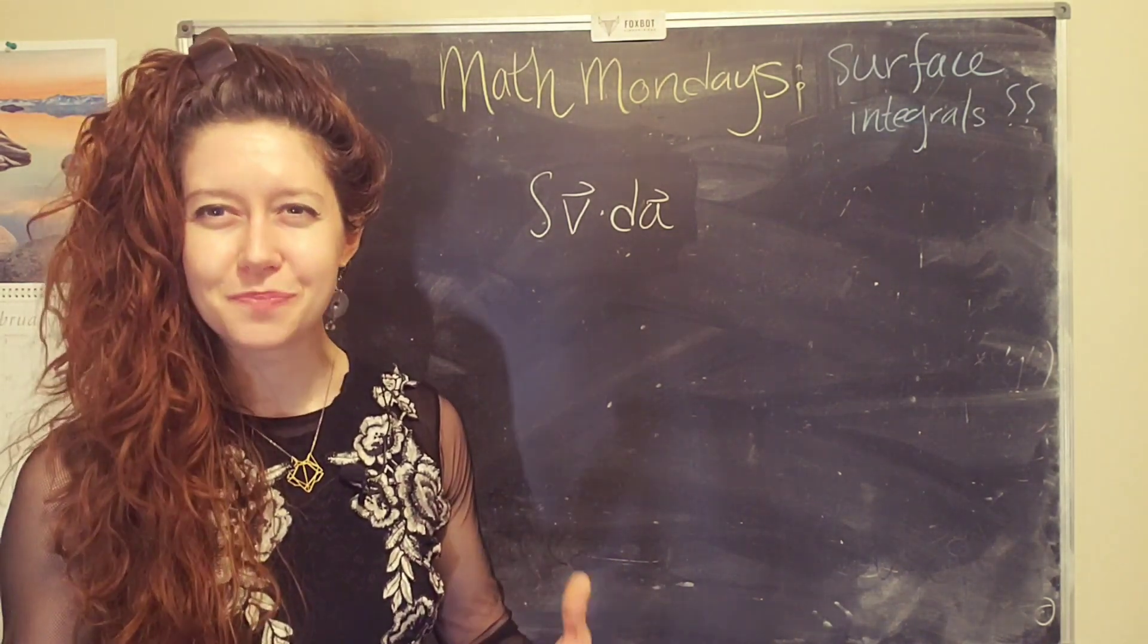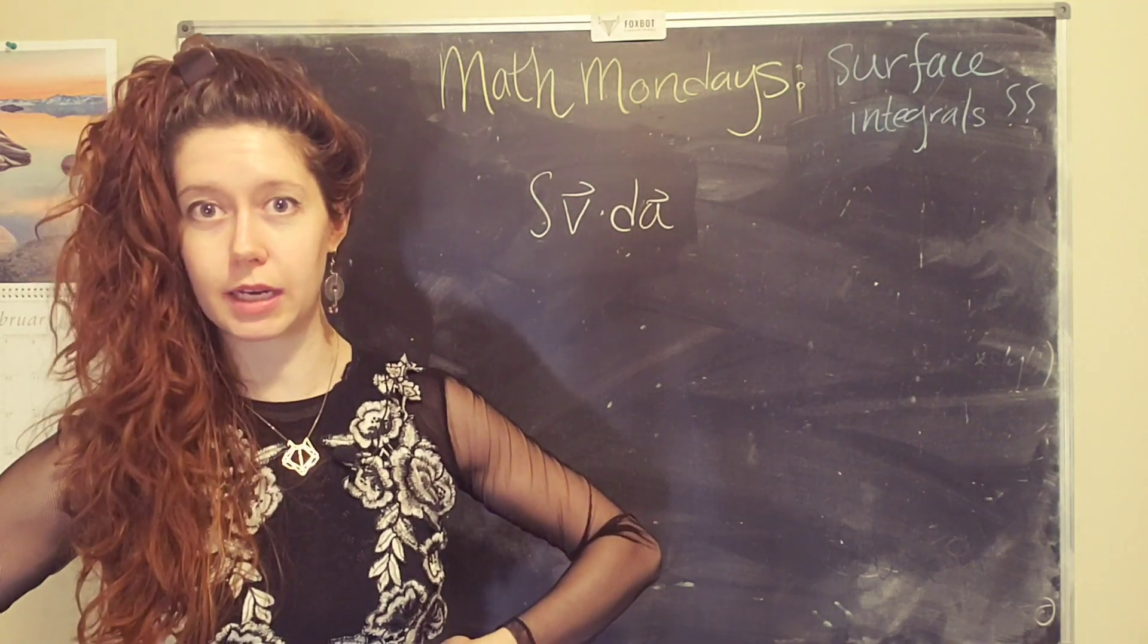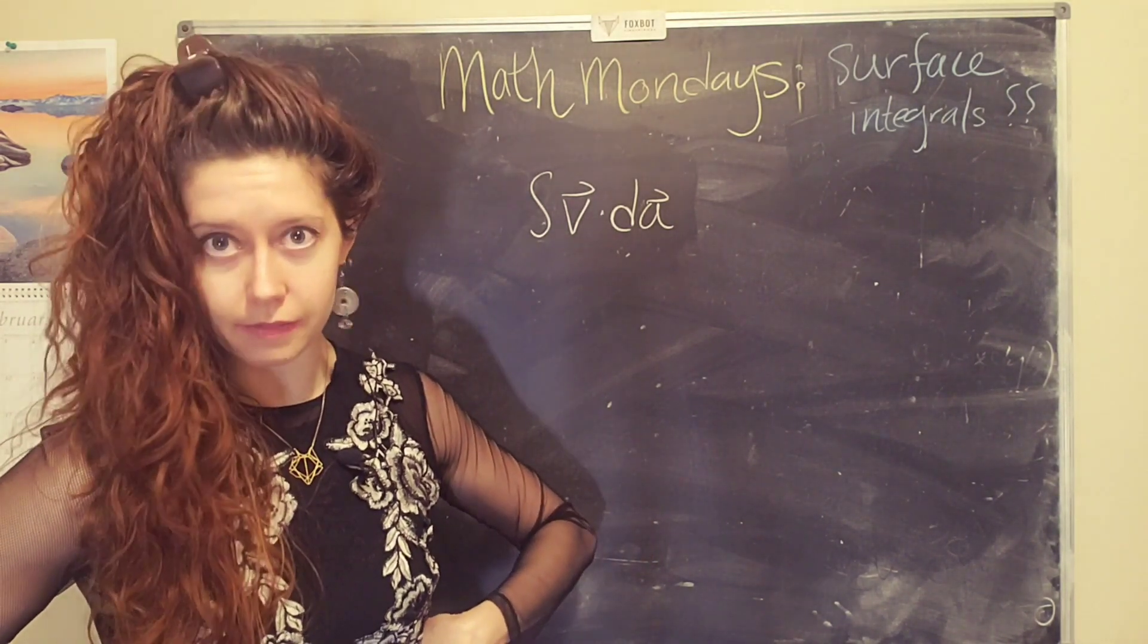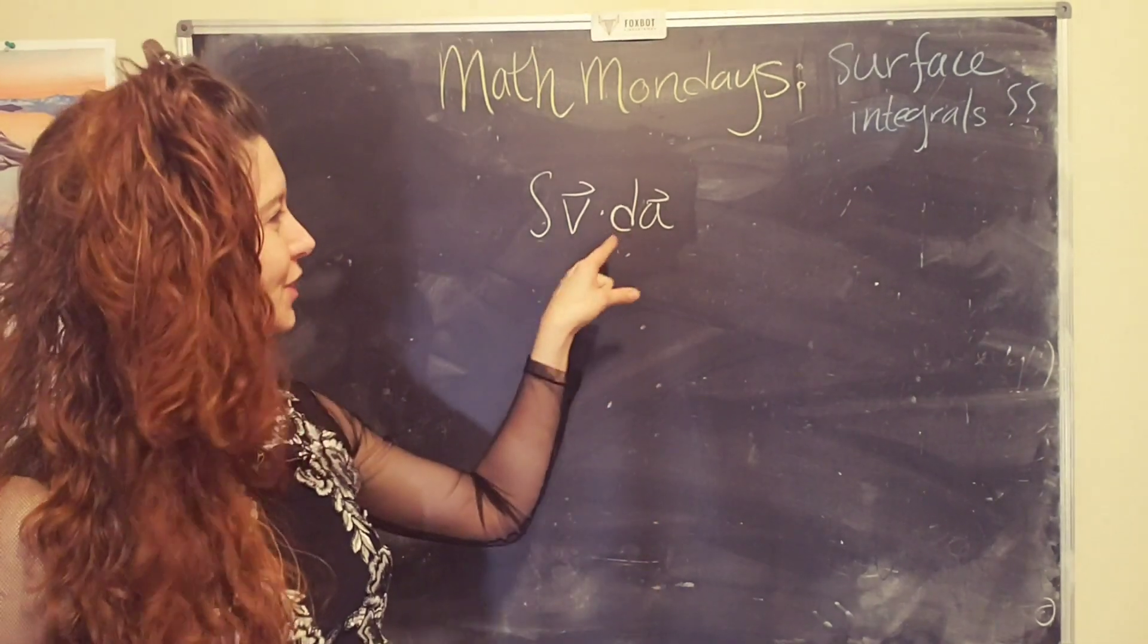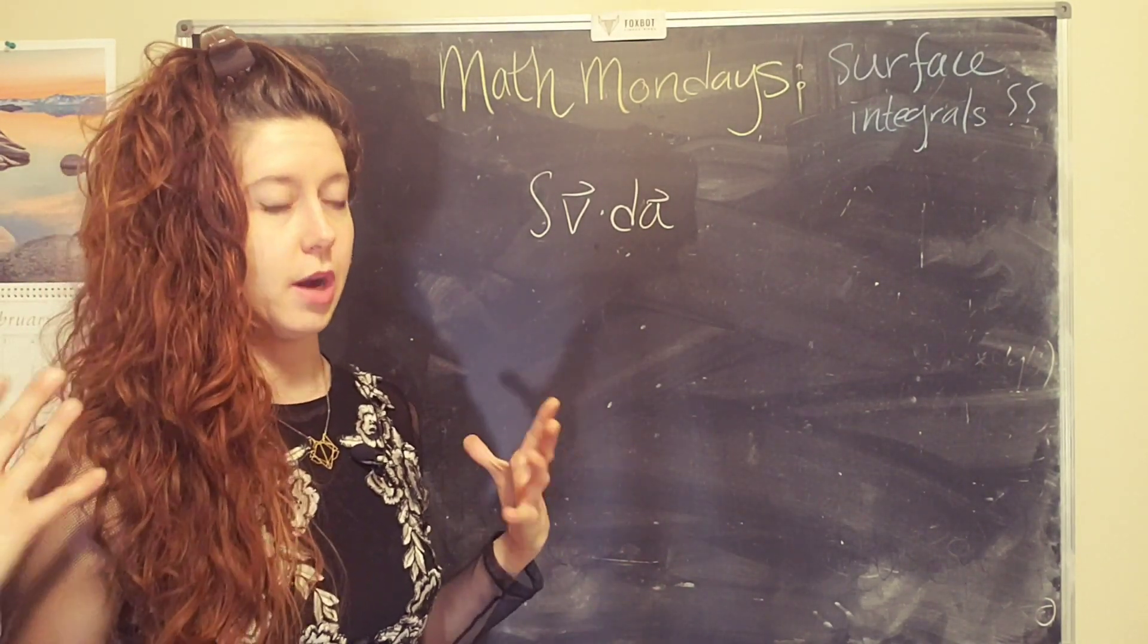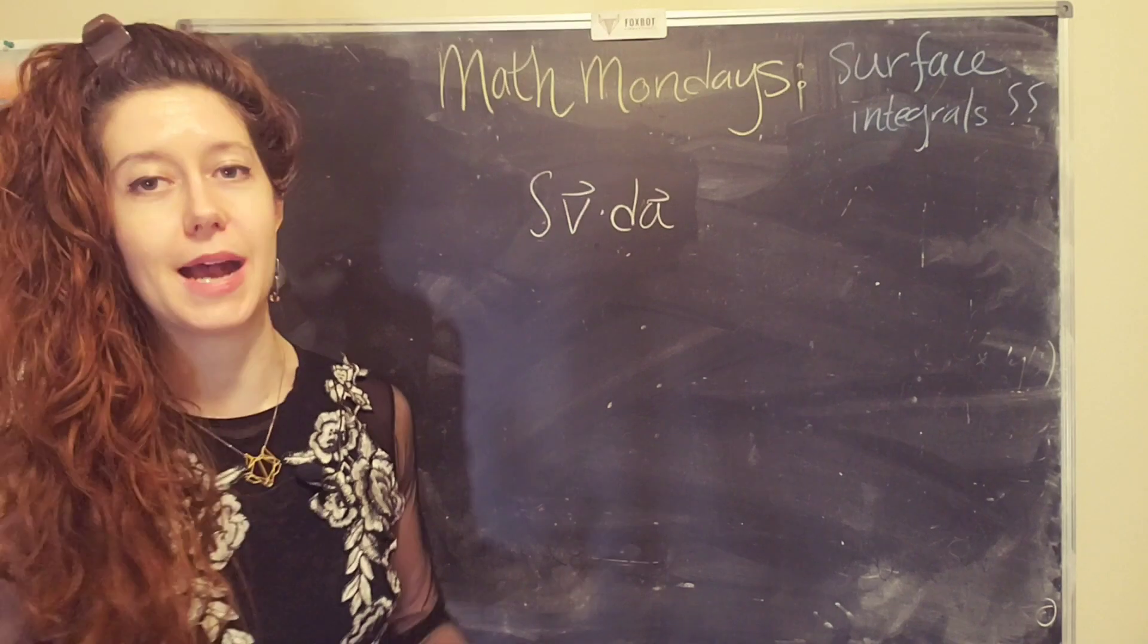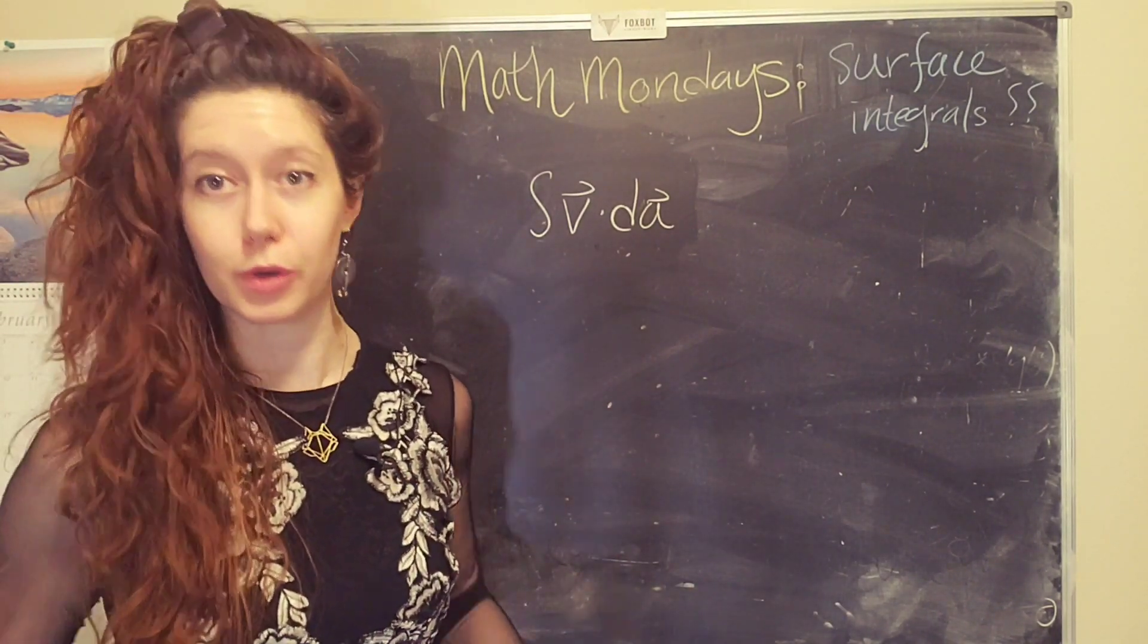But as an example, let's say that you want to do a ridiculous magic trick and you want to figure out how much hot lava is going through your hula hoop at a given point in time. You can use the equation for surface integrals to figure out how much mass of hot lava is passing through the area of your hula hoop per a given unit of time.